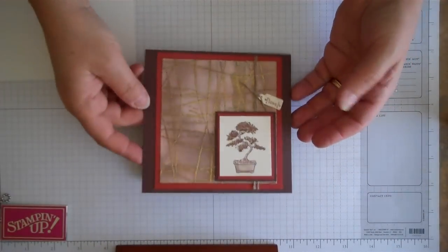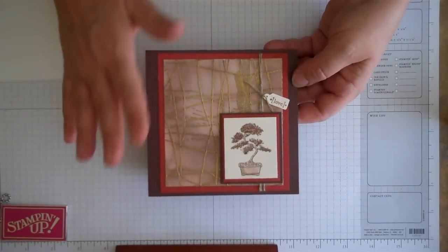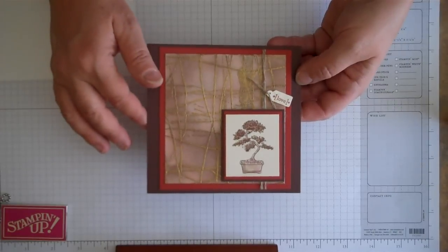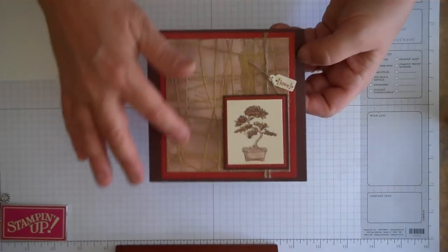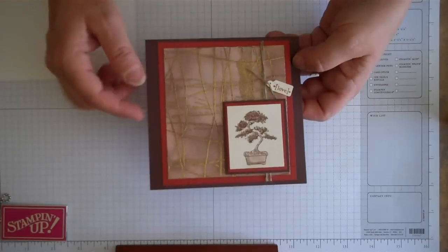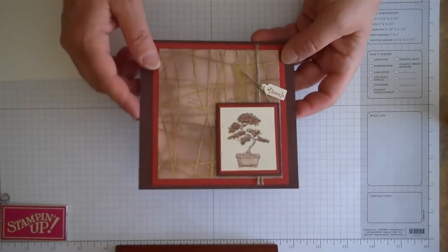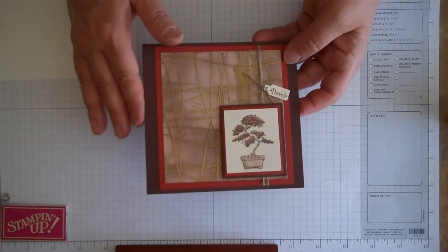Hi Stampers, today we're going to be doing a technique rather than making a card, although I wanted to show you how you can use the finished product in a card. We're going to be doing this background here, and this background is actually done with a brayer, so I'll show you how you can do that. It's very easy and comes out really beautiful, and every time you do it it's a little bit different.